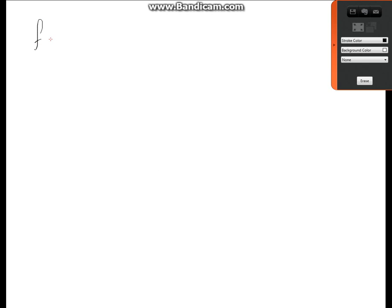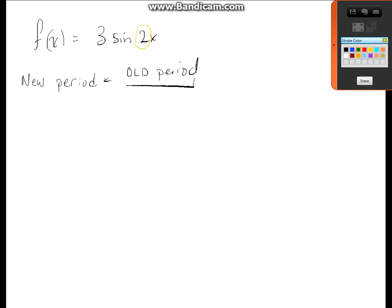So f of x equals 3 sine of 2x. First things first, since we know what the sine curve looks like, if you need to stop the video and go back and look at how we got the sine curve, okay, and then come back. So first things first, to find a new period, this whole idea of compression of that sine curve. We've got to start with the old period, and this is what we do. We're going to divide the old period by a number. And the number we're going to divide by is this number. So we end up dividing by 2.